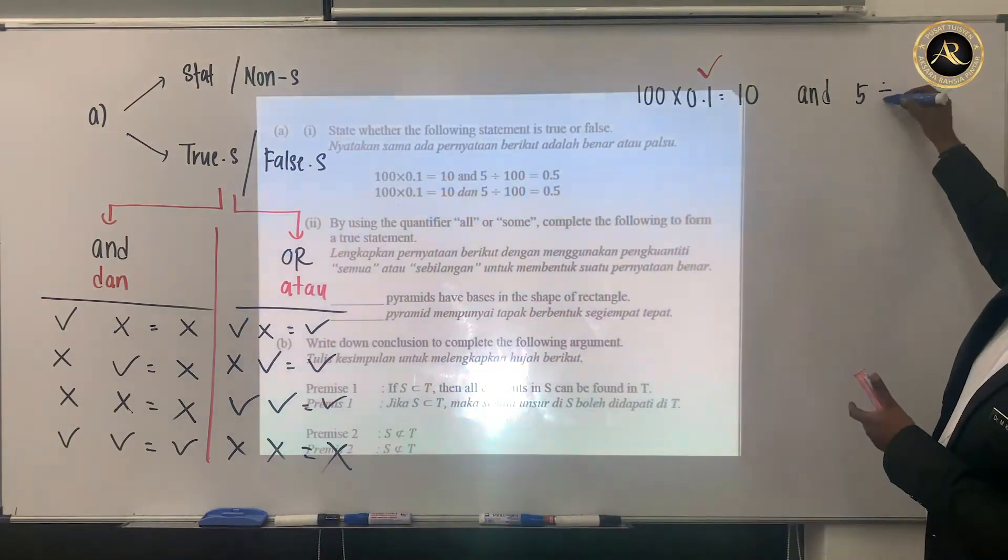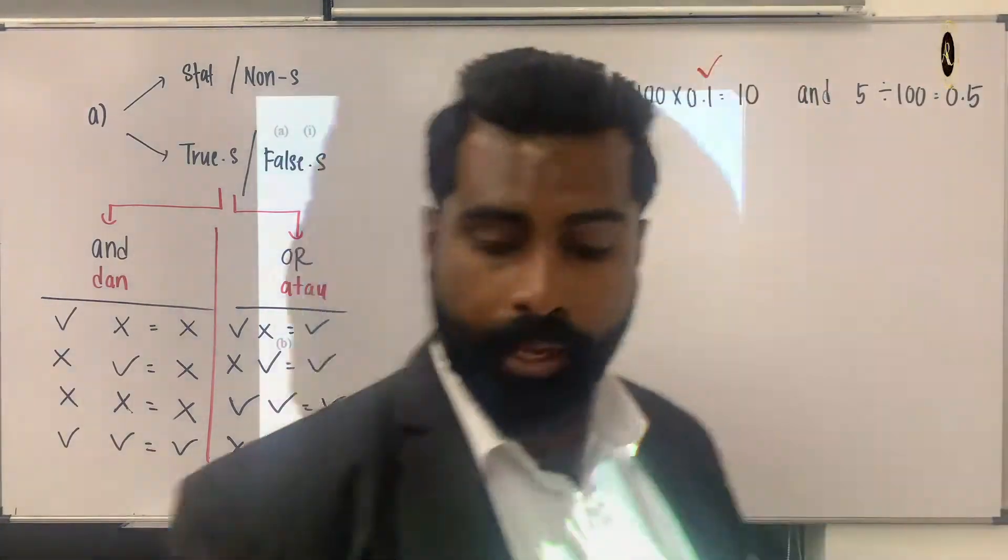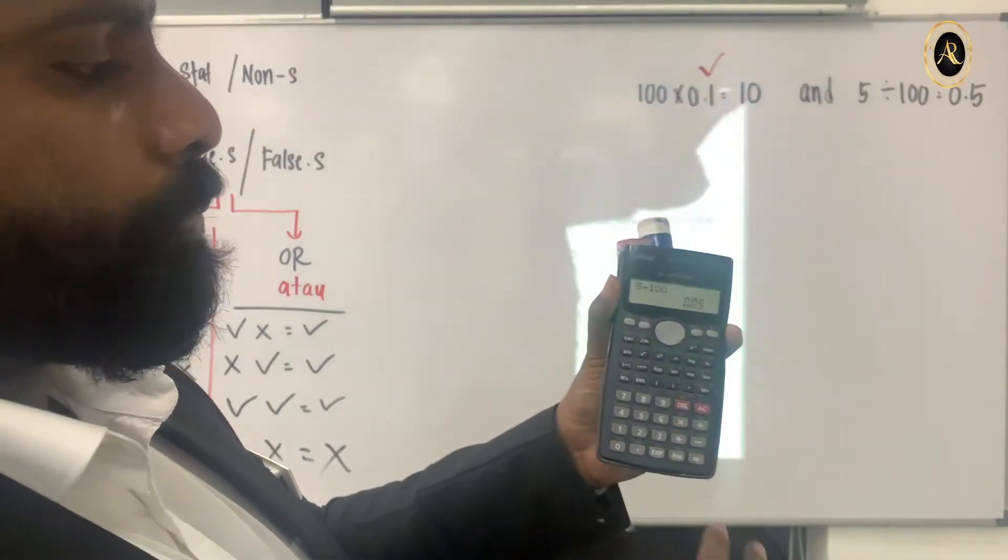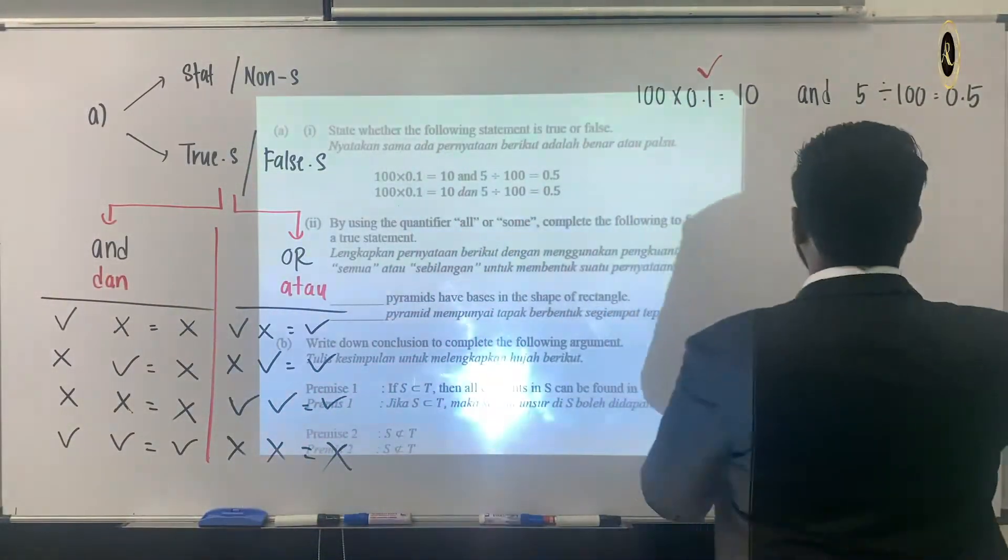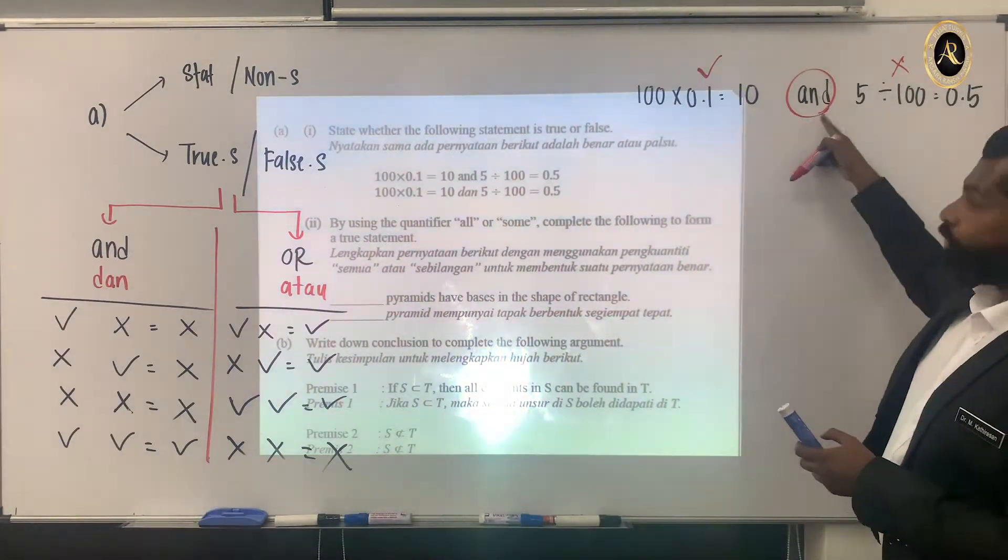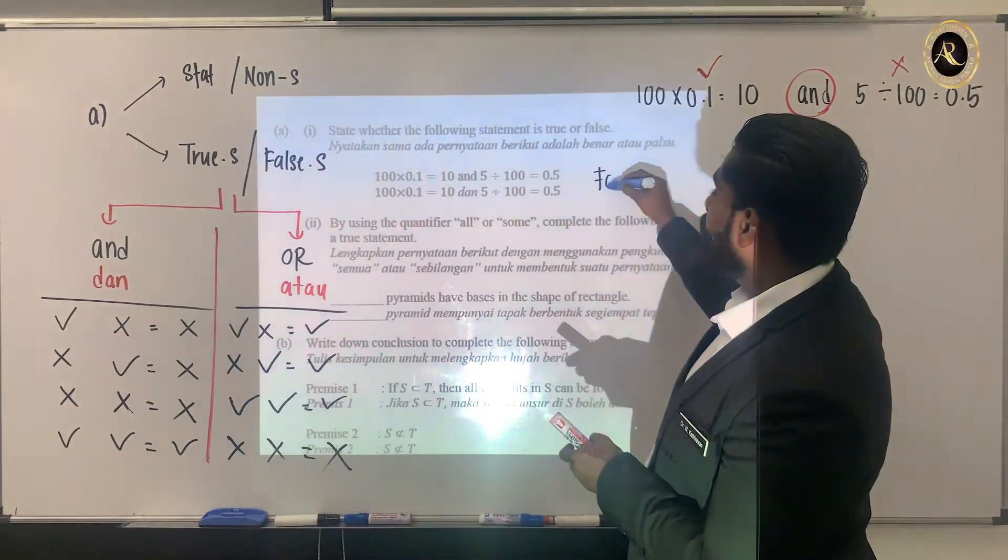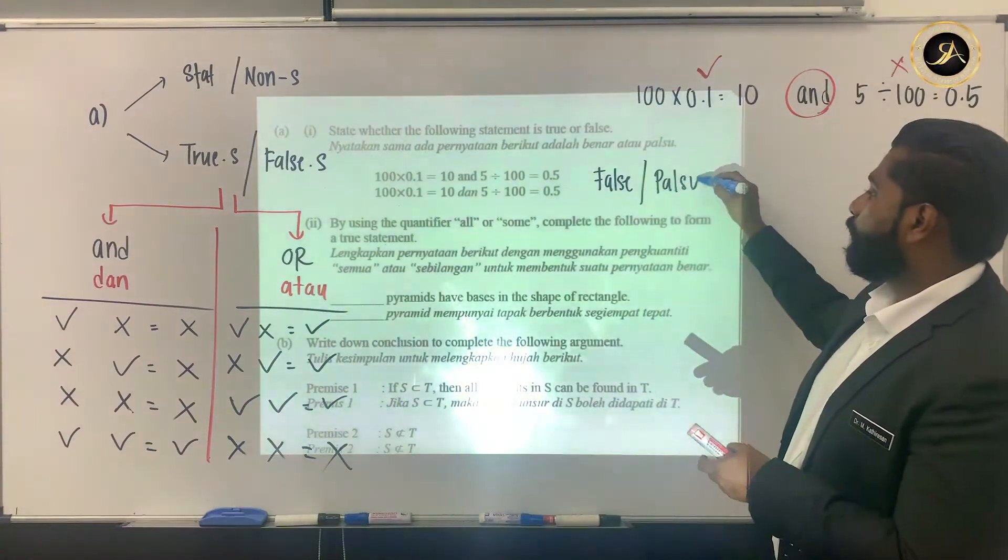5 divided by 100 equals 0.5. We check with the calculator again. 5 divided by 100, you're supposed to get 0.05. So this one is wrong. For 'and', one wrong means the entire answer is wrong. So the answer here is false, or in Bahasa Melayu, palsu.